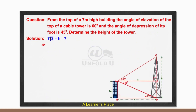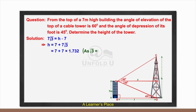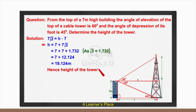Therefore h = 7 + 7√3 = 7 + 7 × 1.732 (since √3 ≈ 1.732) = 7 + 12.124 = 19.124 meters. Hence the height of the tower is approximately 19.12 meters.